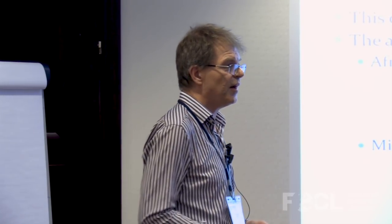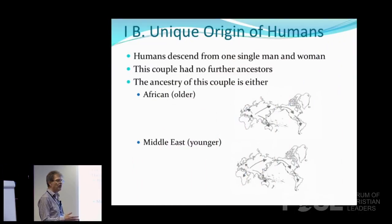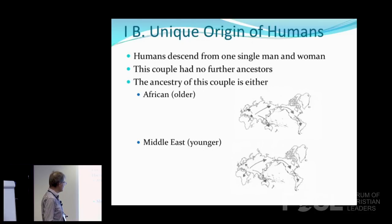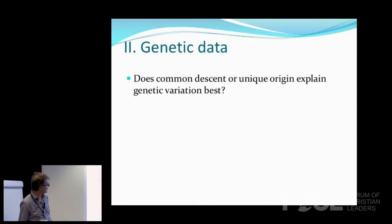According to some young earth creation models, there was only one continent from the beginning with later continental drift. We could also think of starting after the time of Noah: the first couple lived in the Middle East and then dispersed. A disadvantage is that African DNA looks older, which I don't have time to address. However, according to John Sanford and others, our genome is actually eroding over time because natural selection cannot remove all slightly deleterious mutations, which would point to a younger origin of humanity.